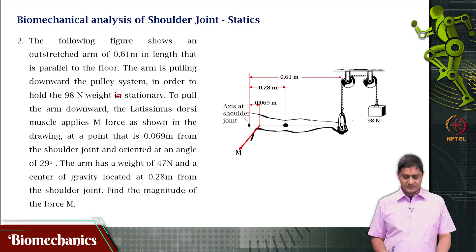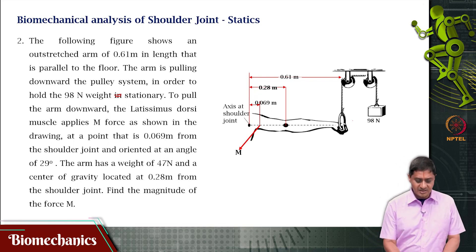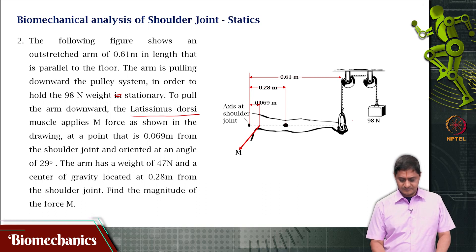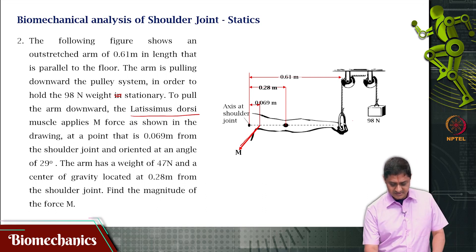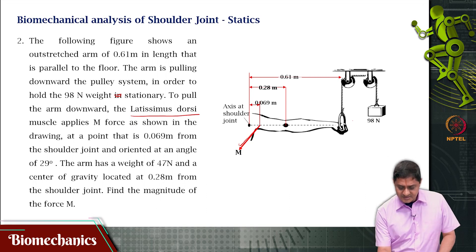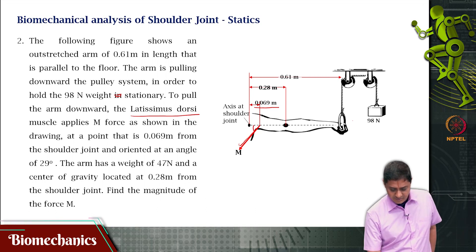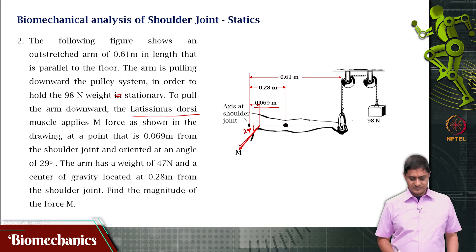It is pulling this down. To pull the arm downward the Latissimus Dorsi muscle applies force as shown in the figure at a point that is 0.069 meters from the shoulder joint and at an angle of 29 degrees to the horizontal. The whole arm has a weight of 47 Newton and its center of gravity is at 0.28 meters from the shoulder joint.